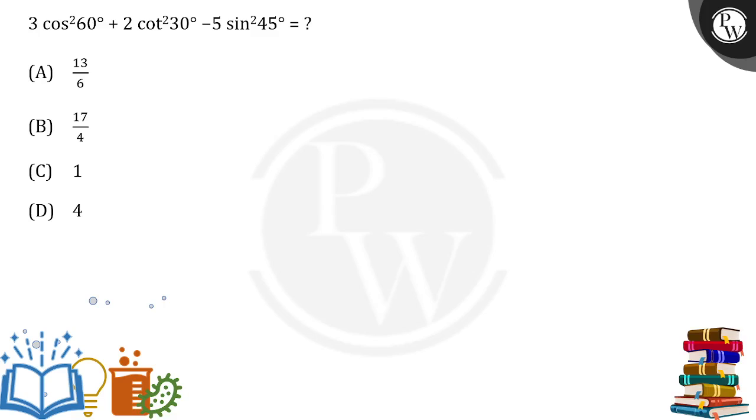So putting up all the values, we have 3 into cos 60 degrees, 1 by 2, so 1 by 2 square, 1 by 2 square over here, plus cos 30 degree, that means cot 30 degree.